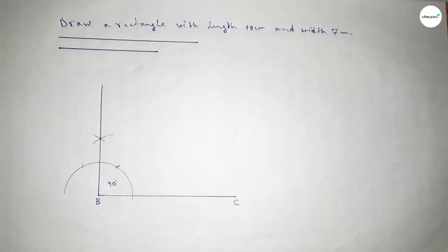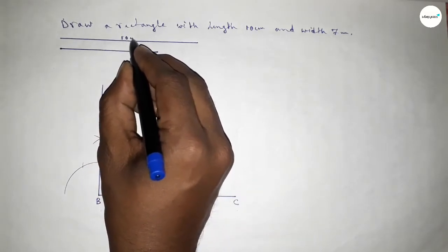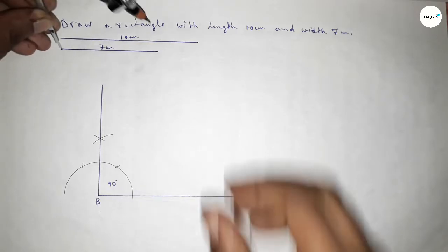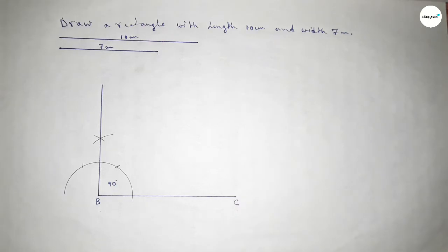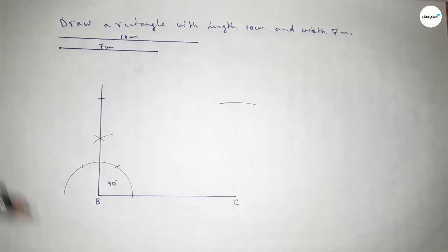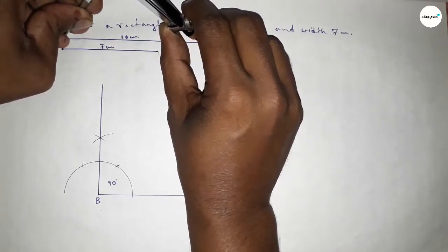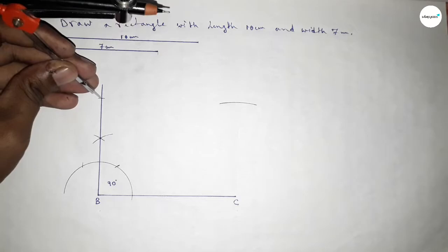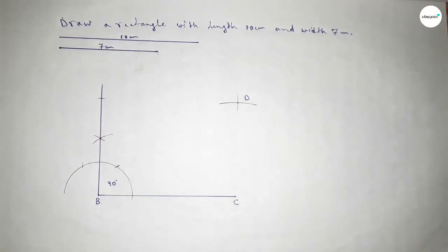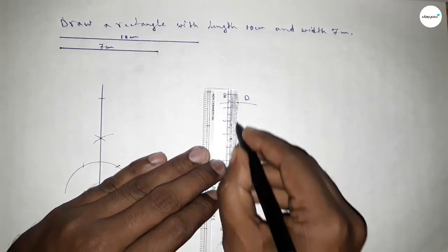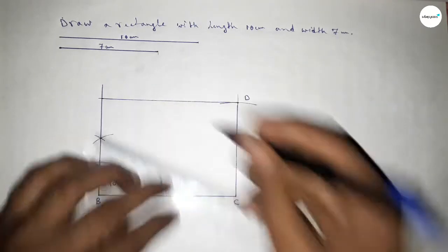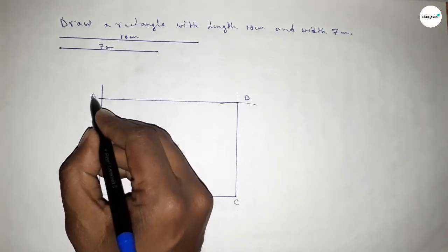This side is 10 centimeter and this side is 7 centimeter. Now taking the length 7 centimeter, putting the compass here and cutting here, and putting the compass here and cutting here. Now taking the length 10 centimeter using the compass and putting the compass here and cutting here, so both curves intersect at point D. Joining C and D, then joining this line.